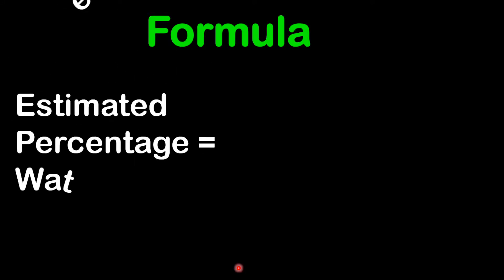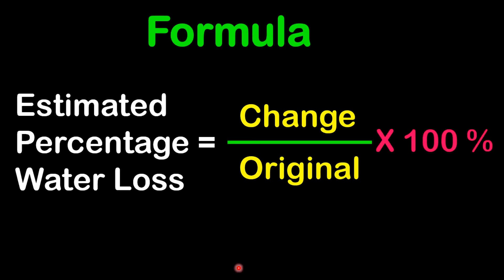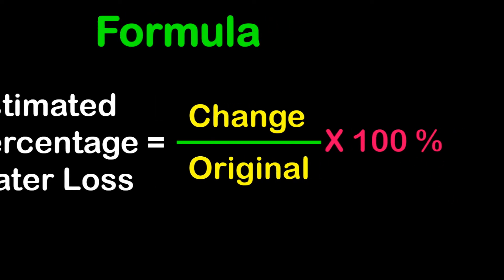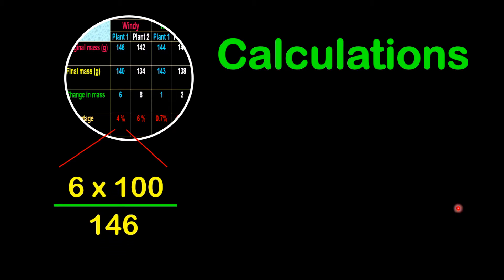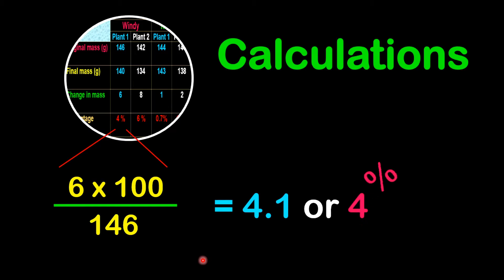The formula to calculate the estimated percentage of water loss is: change in mass divided by the original mass, multiplied by 100%. For example, the change in mass is 6, divided by the original mass of 146, multiplied by 100, which gives us approximately 4.1 or 4%.